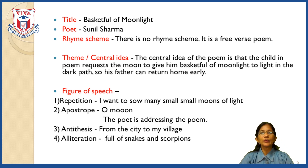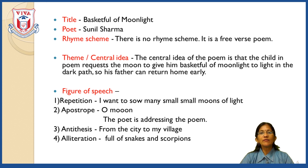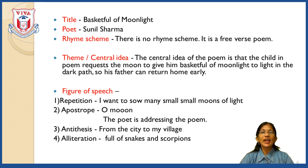The second figure of speech is apostrophe — for example, 'Oh moon,' 'Oh bird,' 'Oh god.' When you address someone or something directly like this, it is called apostrophe. The third figure of speech is alliteration. For example, 'full of snakes and scorpions' — the letter 'S' repeats in 'snakes' and 'scorpions.' That is alliteration — when a letter repeats. These are the figures of speech in this poem.